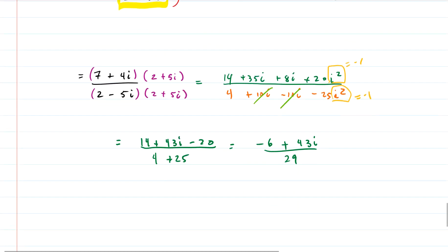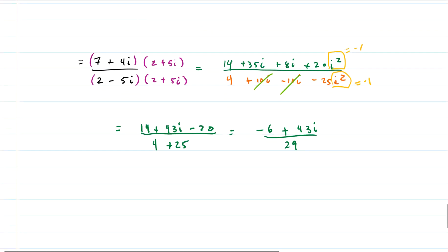Plus 43i and the bottom we have 29. So we're almost done at this point. The last thing we need to do is we need to change to a plus bi form. Because complex numbers are always written in that a plus bi form.